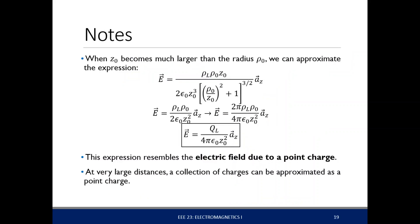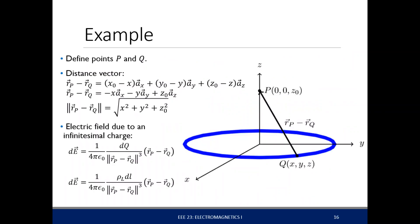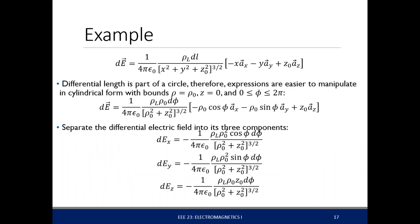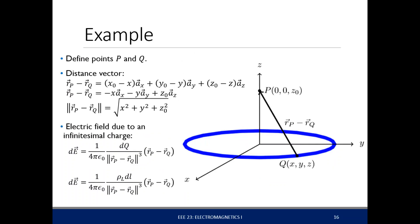Previously, I've shown you an example of how to calculate the electric field of a uniform distribution around a ring. Notice that this ring actually has symmetry along the x-axis or the y-axis. Because of this symmetry, the electric field at this point is only along the z-axis.